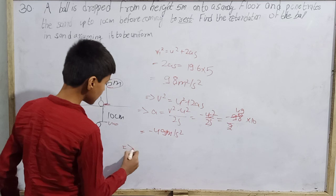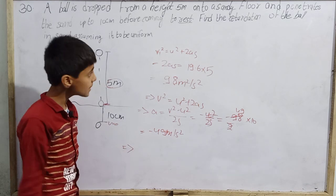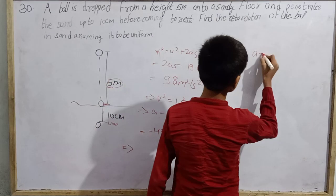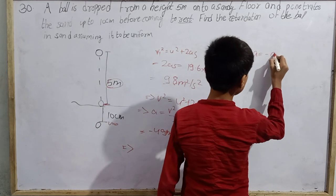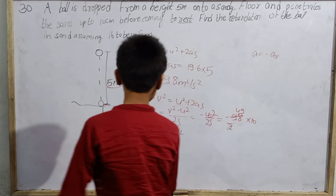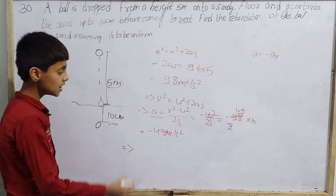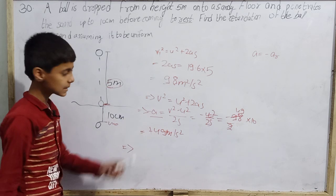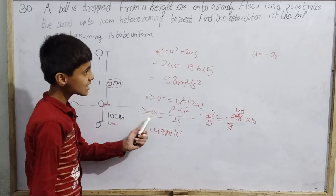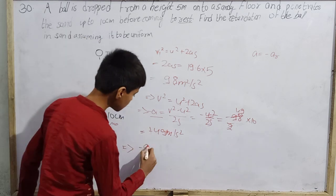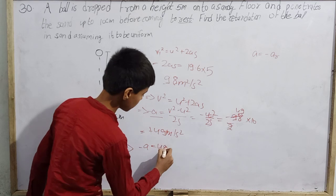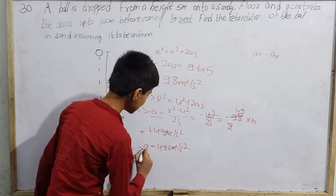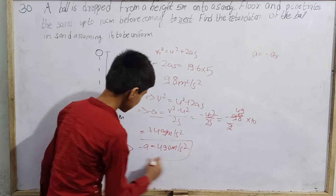We don't need acceleration here — we need retardation. The negative value of acceleration means it is retardation. So if I put the negative sign, retardation is positive. That is 490 meter per second square. This is our correct answer.